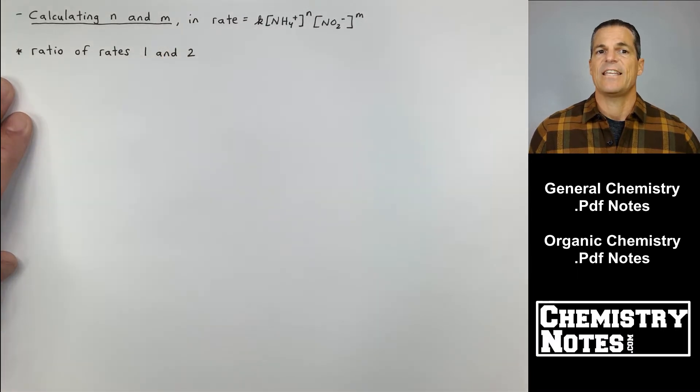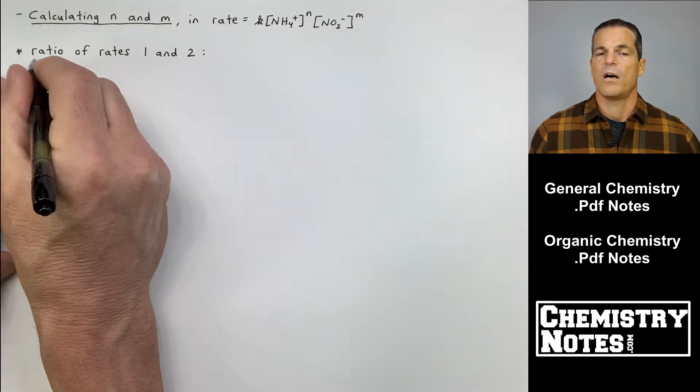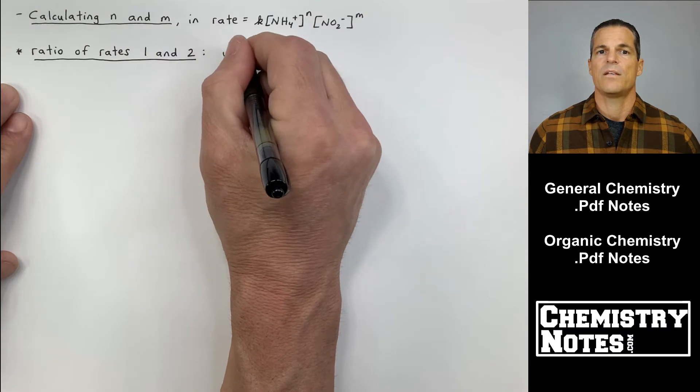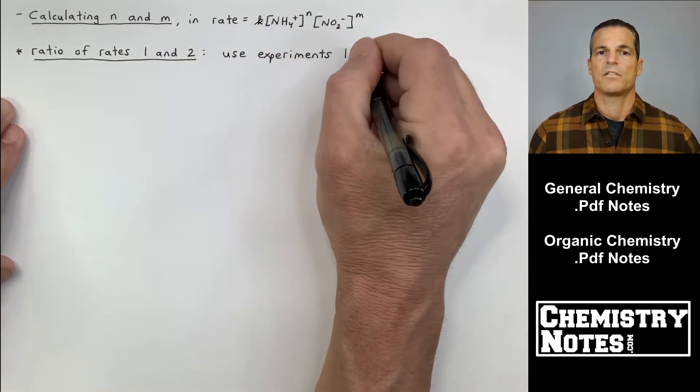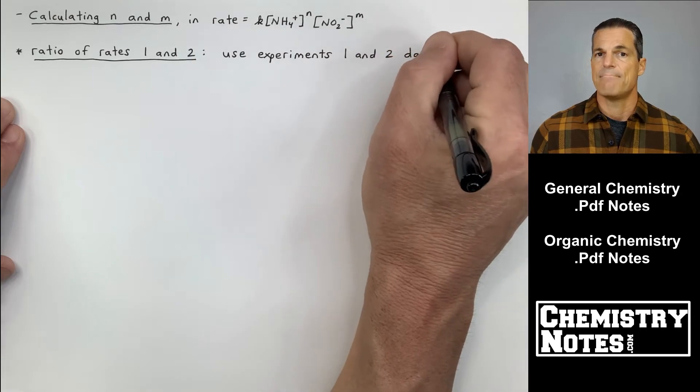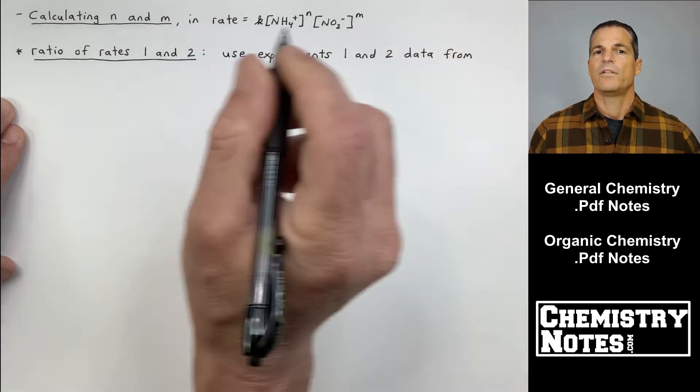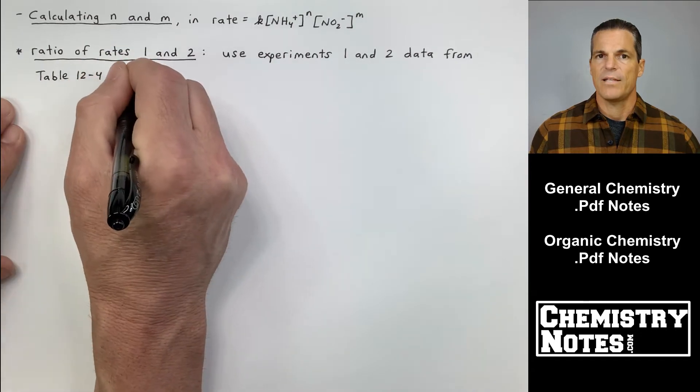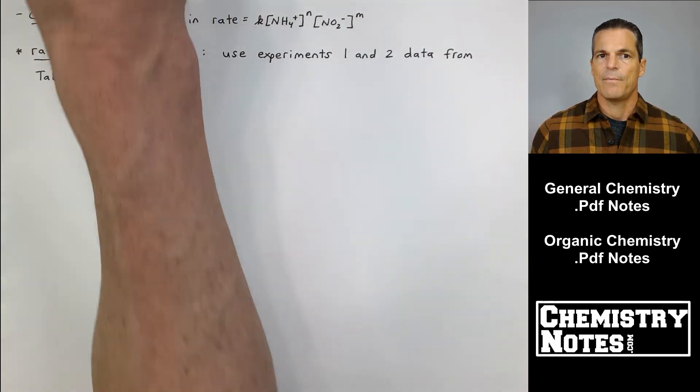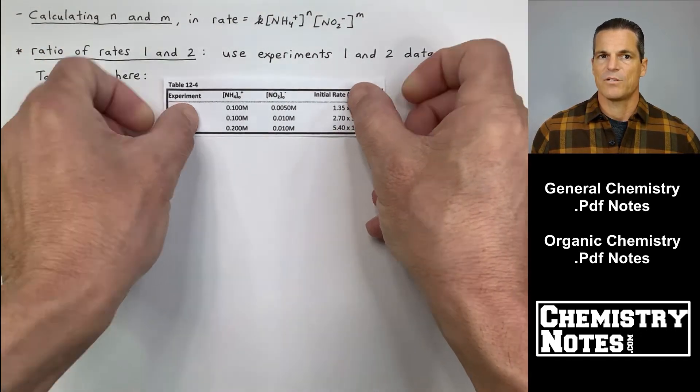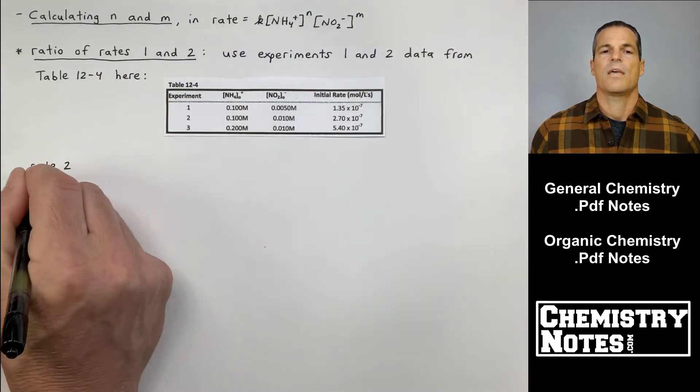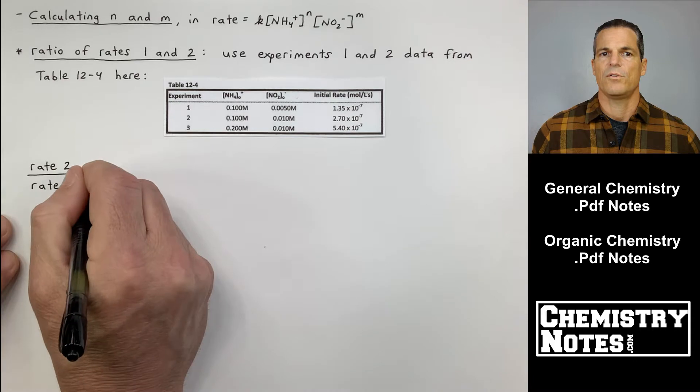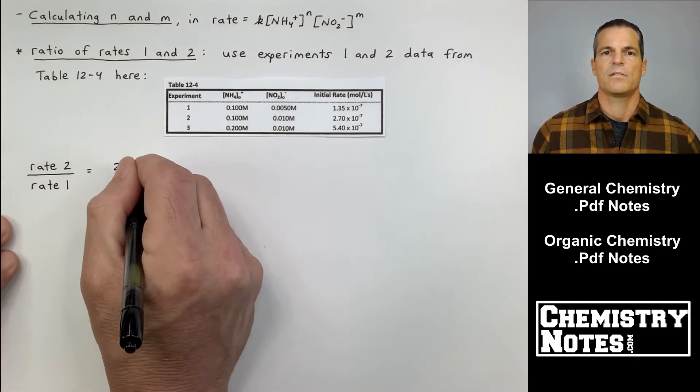Calculating N and M in our rate law: rate equals K times the concentration of NH4+ to the N times the concentration of NO2- to the M. I'm going to look at the data table. I'm going to post it right now. This is the same table from the last page. The ratio of rates one and two.